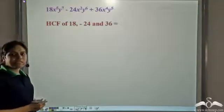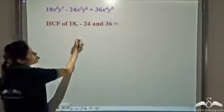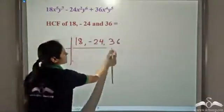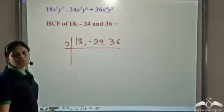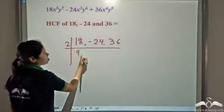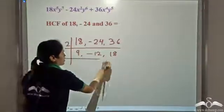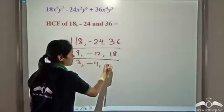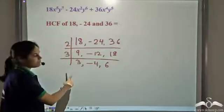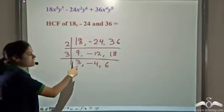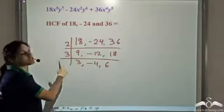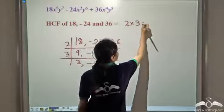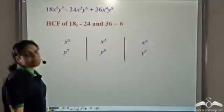Let us find the HCF of 18, −24, and 36. We can divide all three by 2, giving 9, −12, and 18. Then 3 is a factor of all three, giving 3, −4, and 6. There is no further common factor — 2 is common to two of them but not all three, and 3 is common to two but not all three. So the HCF is 2 × 3 = 6. The HCF of the numerical part is 6.